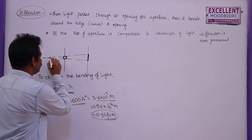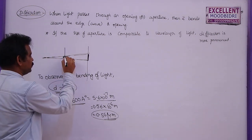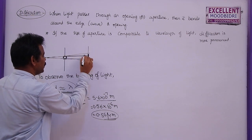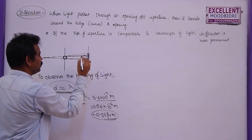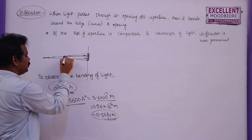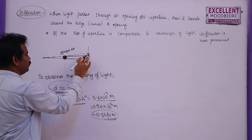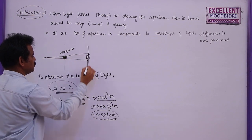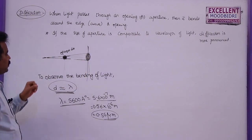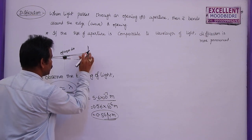So this light will travel directly like this. If the size of the opening is nearly equal to the wavelength, then this light will bend into this region. This bending into the geometrical shadow — for example, if there is an opaque disc here — you will get a shadow of this disc on the screen. But according to diffraction, the light travelling on the edge of this disc will bend into the geometrical shadow.